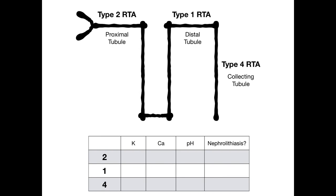We're going to fill in our chart as if we're singing a song. I'm going to give you a poem to get the first part of this table — the potassium. So: 2-1-4, low, low, more. So type 2 renal tubular acidosis has low potassium — hypokalemia. That's your finding. Type 1 renal tubular acidosis also has hypokalemia.